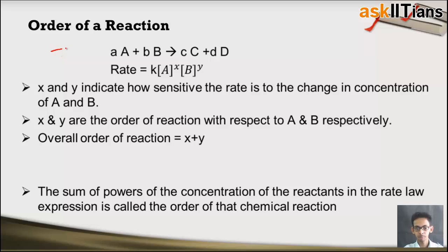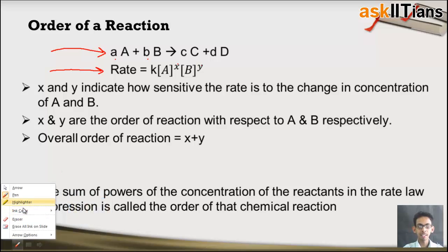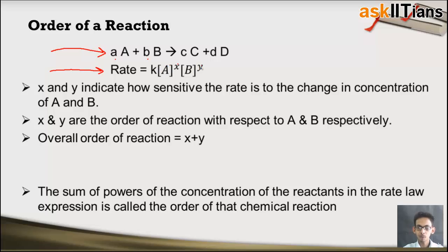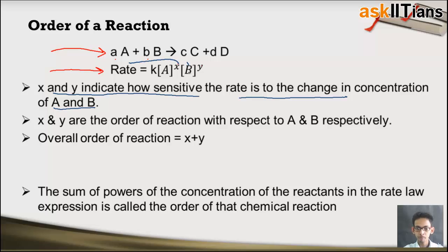For explaining this, here I have taken example of a hypothetical reaction in which reactant A reacts with B to form products C and D, and this is the expression for rate. I have explained in my previous video that these powers x and y may or may not be equal to the stoichiometric coefficients of A and B. The question is: what do these powers x and y indicate? x indicates how sensitive the rate of reaction is to the change in concentration of reactant A, and y indicates how sensitive the rate is to change in concentration of reactant B. x plus y is known as the overall order of a reaction.